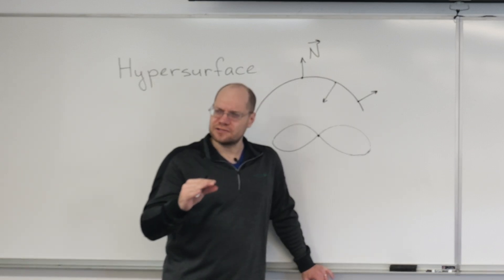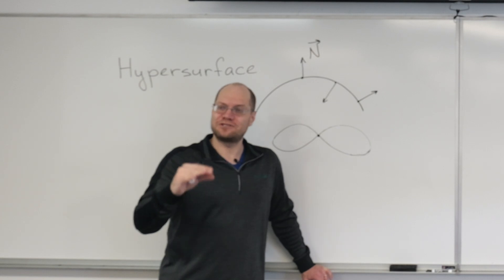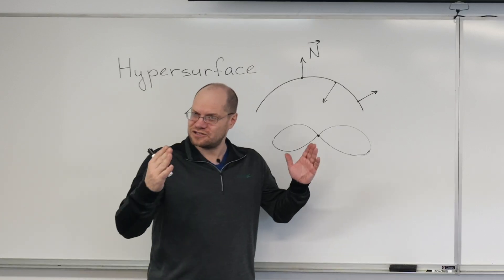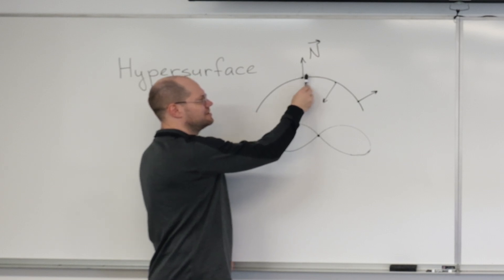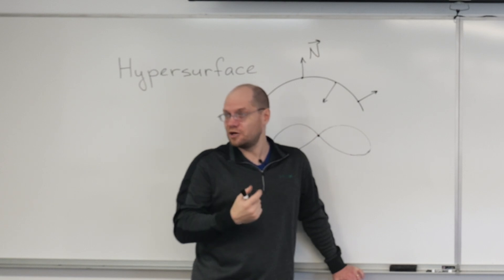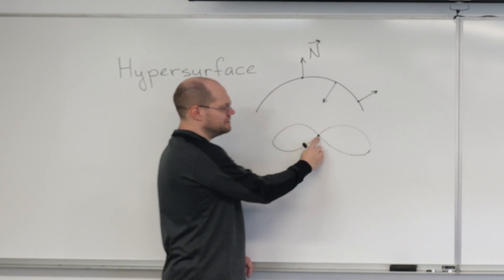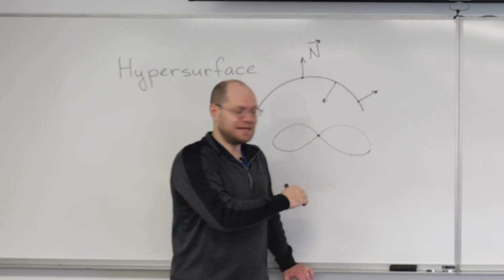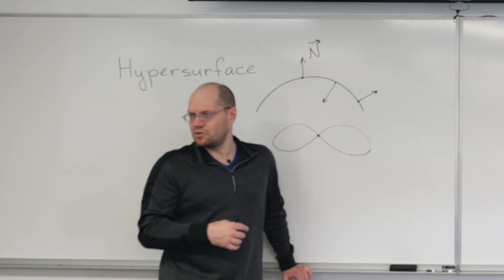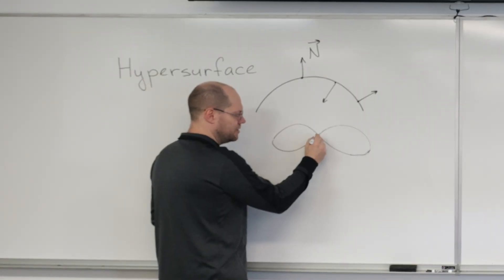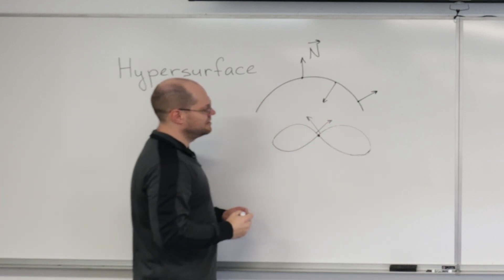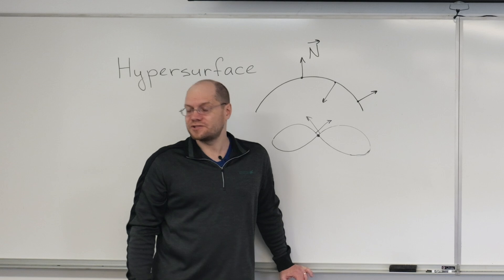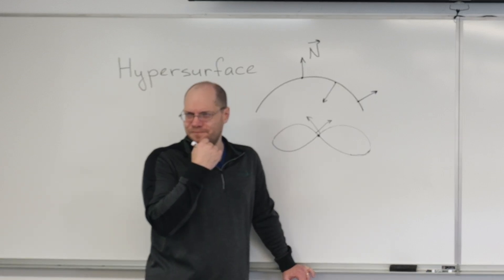For now let's not consider self-intersecting curves. Our focus has been on local properties. And even though later today we'll talk about integration — which by definition is a global operation — our interest is more in local properties. We basically consider a point and a small interval around it and consider derivatives. The problem that might occur with a self-intersecting shape is global: it's in the global sense that we're not able to define a consistent outward normal. If we do say that our normal is outward-facing, then we have a point with a singularity.